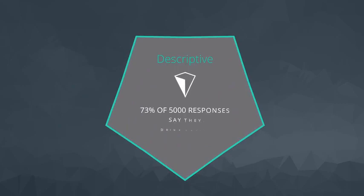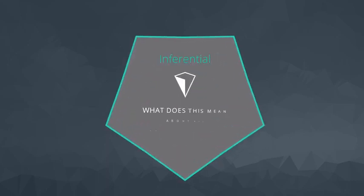Descriptive statistics is about describing the data we have — that is, any information we have and share regarding the 5,000 responses is descriptive. Inferential statistics is about drawing conclusions regarding the coffee drinking habits of all Udacity students only using the data from the 5,000 responses.